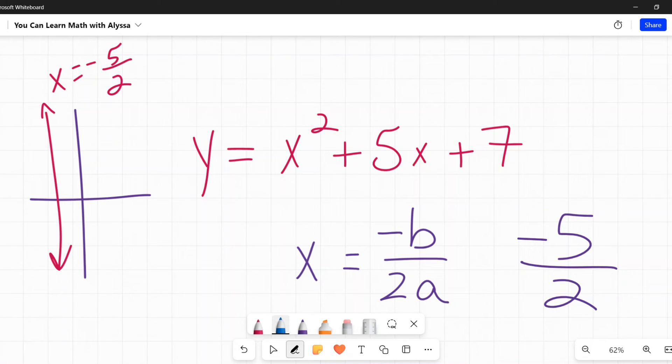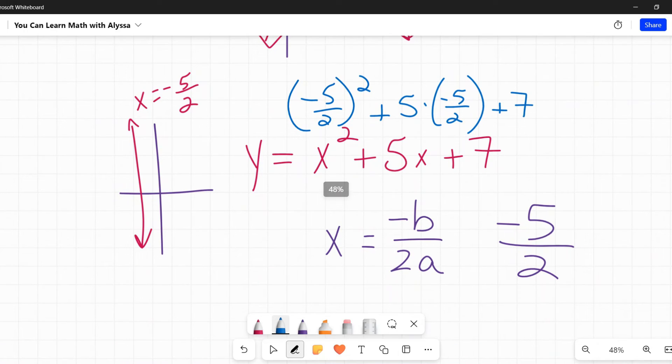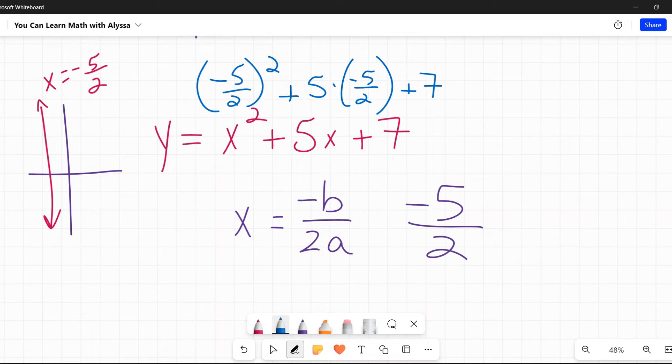That is my X value for my vertex. I need to plug it in wherever there is an X in this original one. Do all this math, and then I will get my Y value. This is where most people are wanting their calculators, and I don't blame them because fractions. Negative 5 halves squared plus 5 times negative 5 halves plus 7. But this is my own fault because I'm the one that made up this problem and I picked something that would turn out as a fraction.